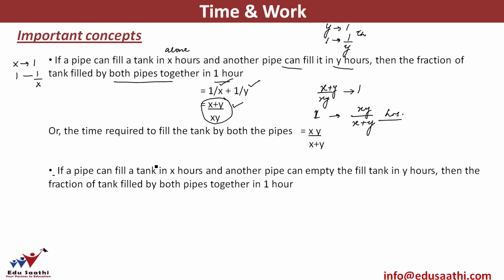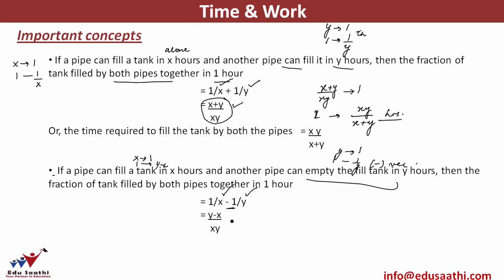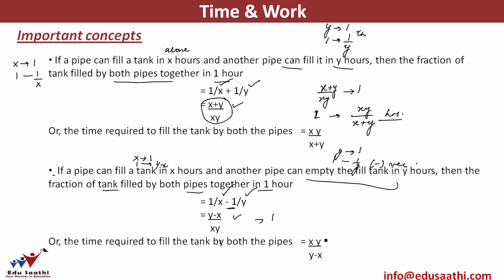If a pipe fills in x hours (1/x per hour) and another pipe empties it in y hours (−1/y per hour), the net fraction of tank filled in one hour is (1/x − 1/y). Solving gives the time to fill the complete tank as xy/(y−x) hours. This is how you can solve such questions using the formulas.